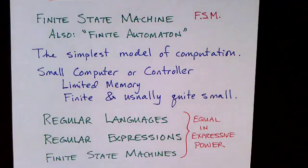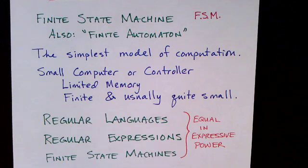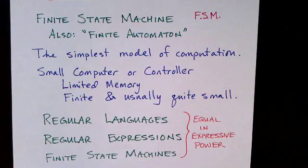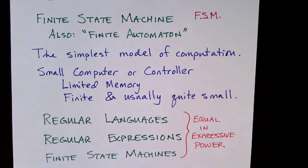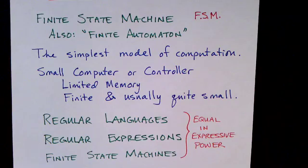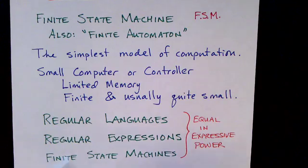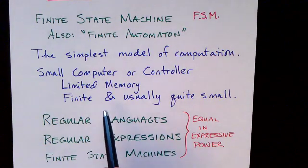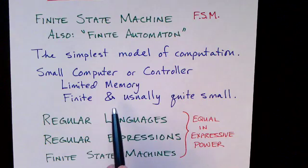The finite state machine is the simplest model of computation. Essentially, it models a very small computer or a microcontroller. The key aspect of this little computer is that it has very, very limited memory. The memory is not only finite, but it's also usually quite small. Typically there might be a small number of states which can be represented in a small number of bits. So these things do not have an extremely large amount of power like some of the other models of computation that we'll see later on.